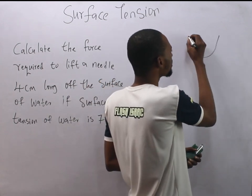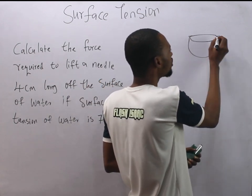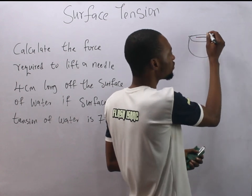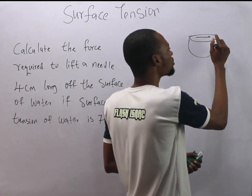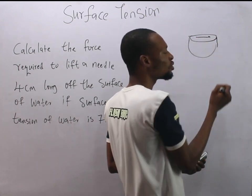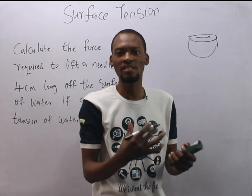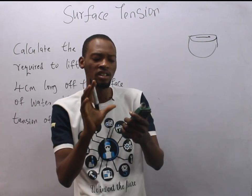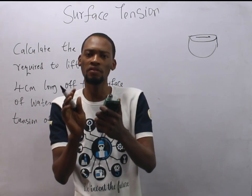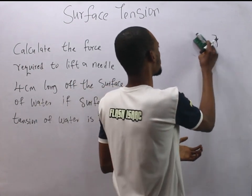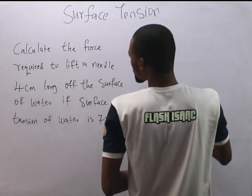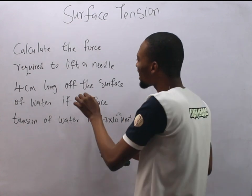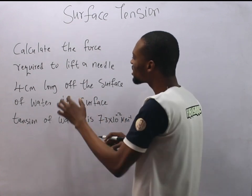You can observe surface tension in insects moving on top of water or a needle placed on top of water. We know that a needle is denser than water, yet it floats on top due to the covering property of water. This question asks us to calculate the force required to lift a needle.